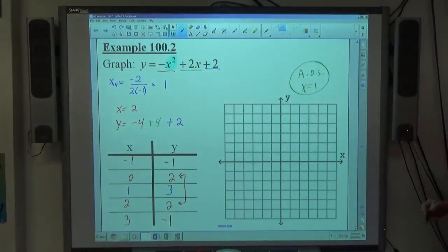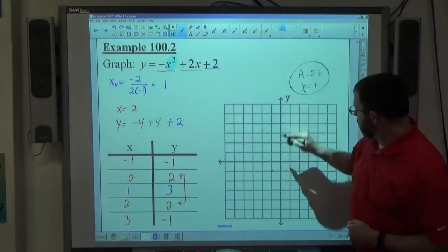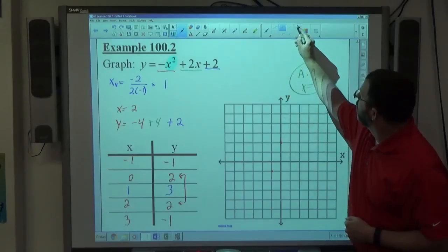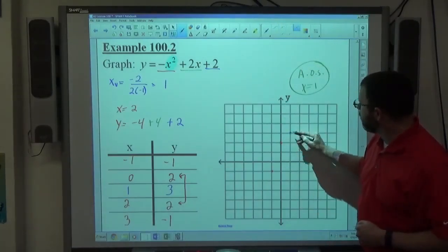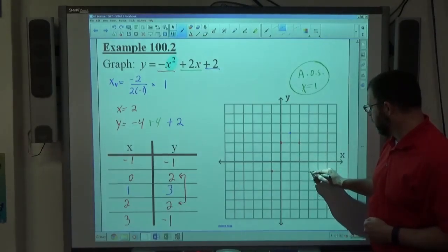So I get my 5 points and I plot those 5 points. Negative 1, negative 1 is right here. 0, 2 is right there. 1, 3 is right here. 2, 2 is right here. And 3, negative 1 is right there.